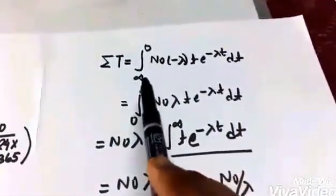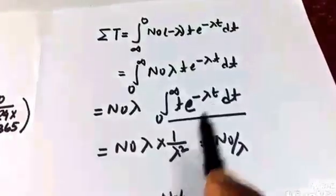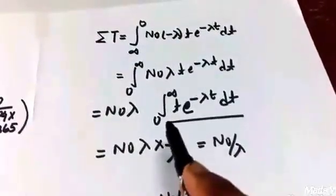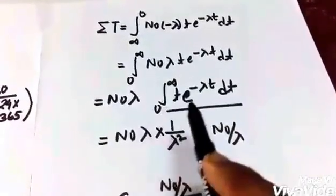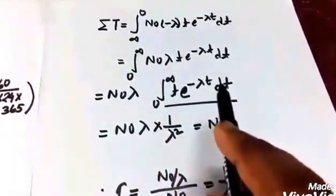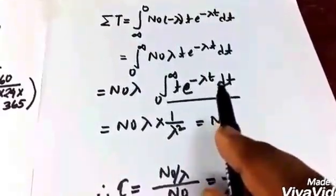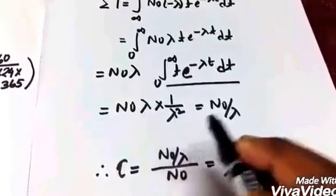Replacing this we will be having this, and I would like to leave this integration as a home assignment for you guys. That's pretty straightforward. The result of it will be found out to be 1 by λ squared, that will give us the amount N₀ by λ.